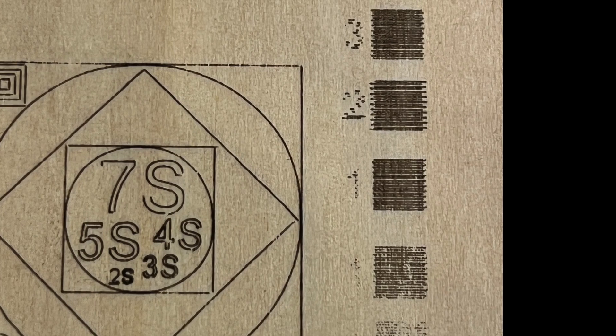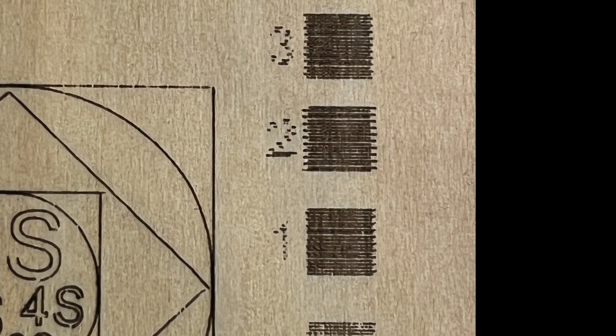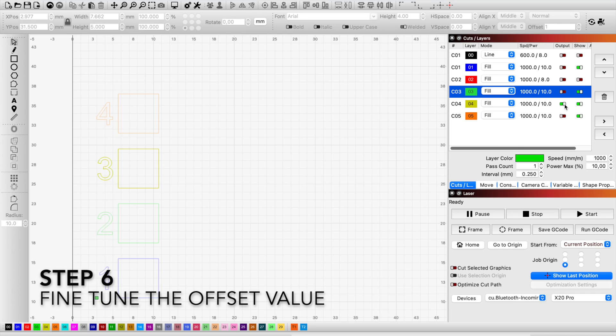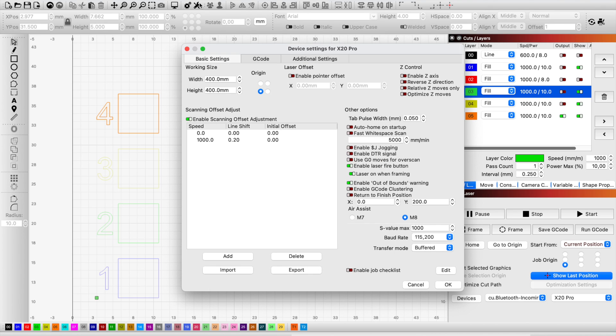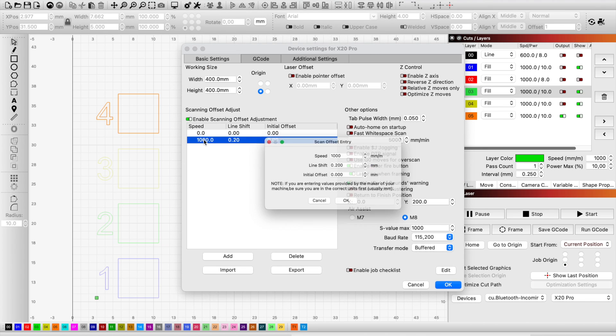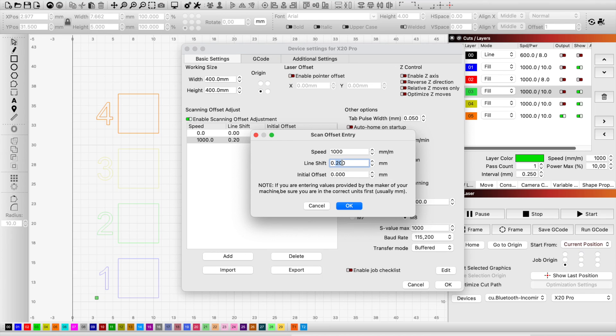What I'll do for the next trial is adjust the scanning offset a little bit, so I will enter 150 micrometers this time. Let's see.